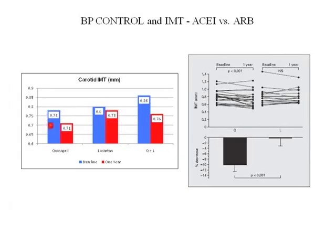If we look at the effect on carotid intermediate thickness after one year, quinipril lowered the IMT from 0.78 to 0.71 — that's 70 points on our scale. Losartan lowered the IMT only 20 points. Combination therapy was also effective. It was the quinipril, the ACE inhibitor, not the losartan, the angiotensin 2 blocker, that made the difference.